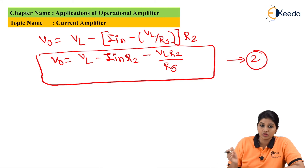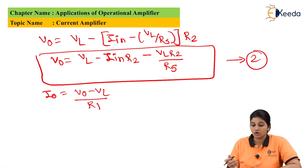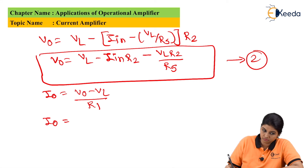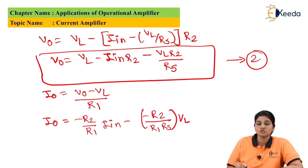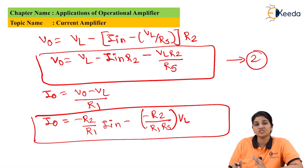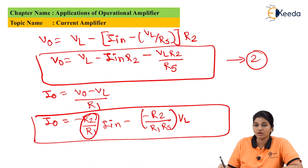Looking at the circuit diagram, the output current i0 is the current flowing through R1 and RL, given by i0 = (Vo - VL)/R1. Substituting the value of Vo from equation two and solving, we obtain i0 = -(R2/R1)·i_in - (R2/(Rs·R1))·VL. Comparing this with the undesirable characteristic equation, the value of A is -R2/R1, i_in is as it is, and the second term -(1/RO)·VL corresponds to -R2/(Rs·R1), indicating that the output current depends upon the input current.